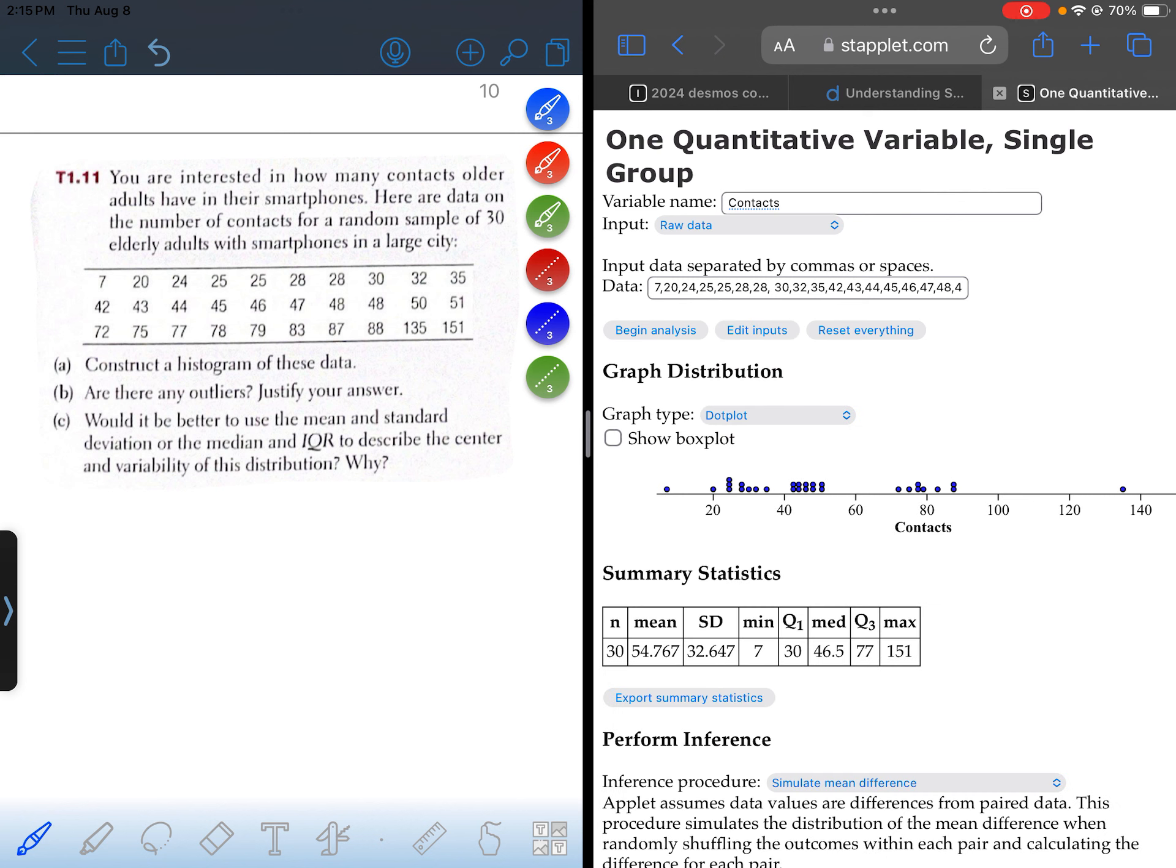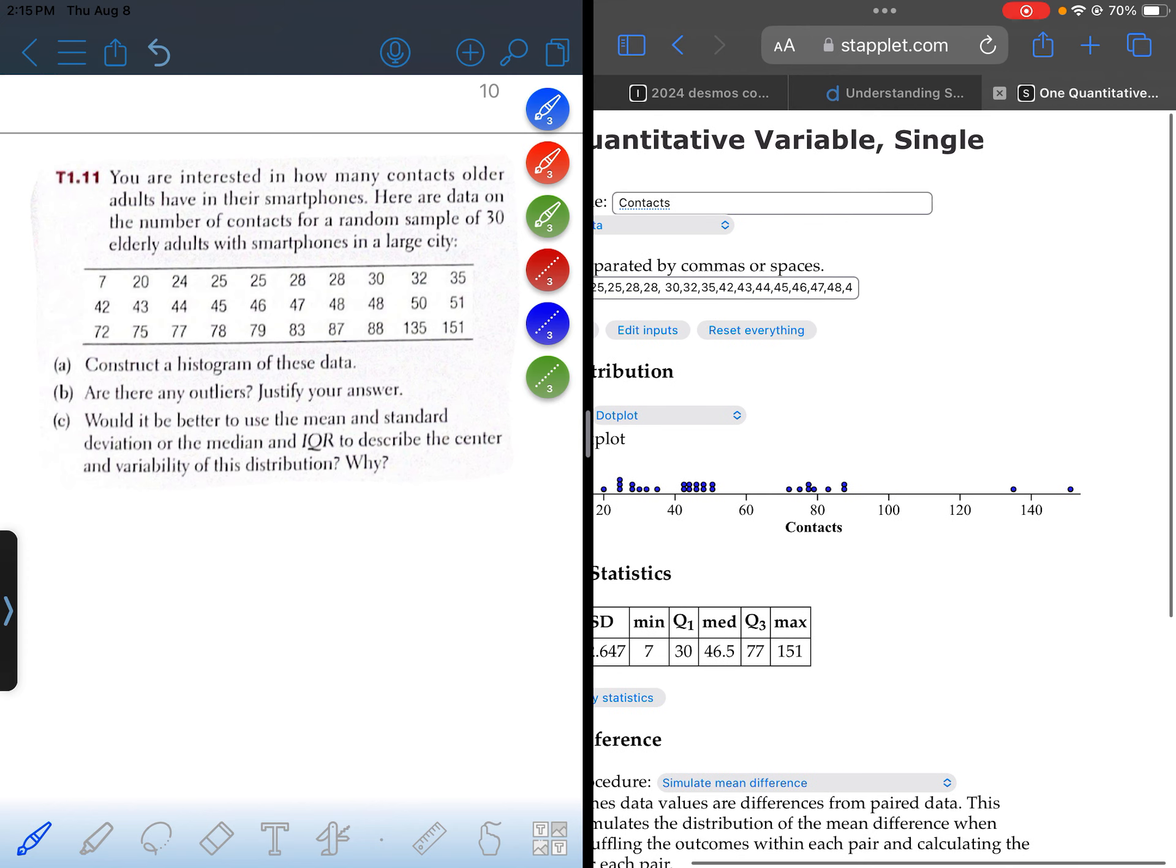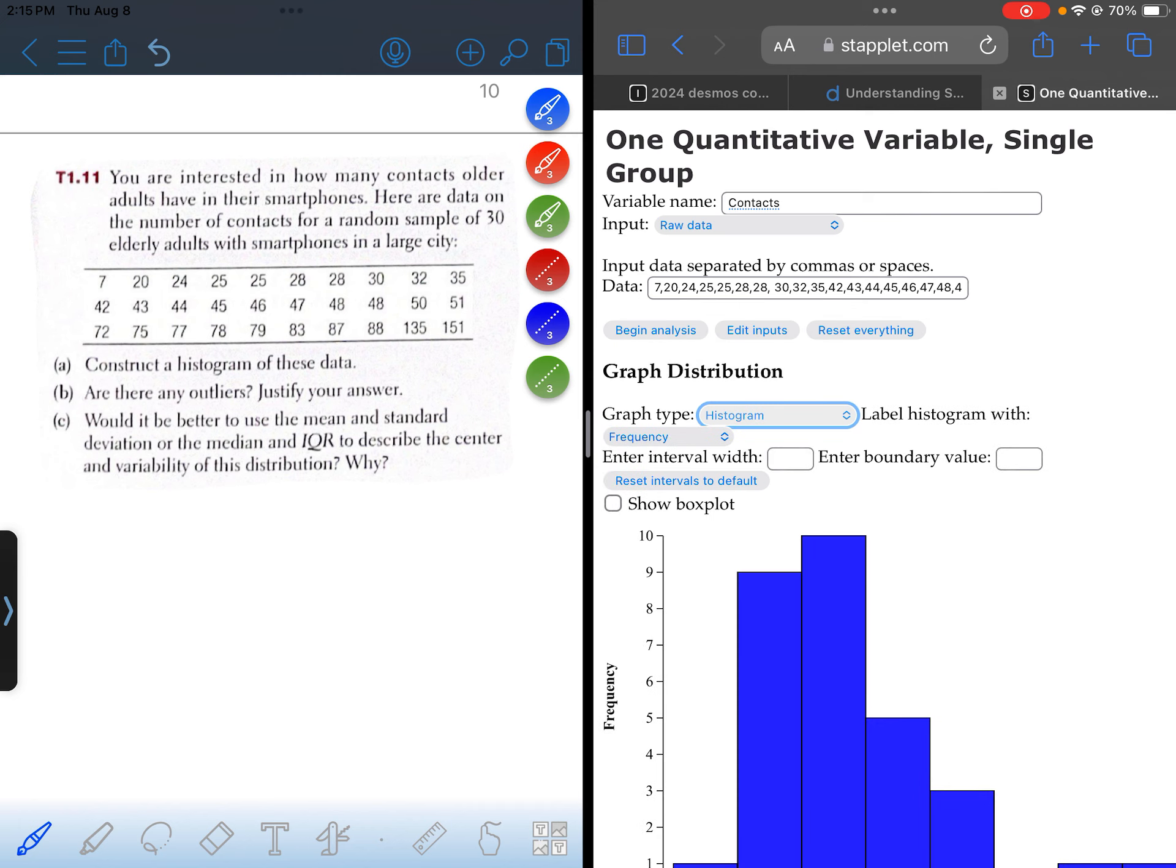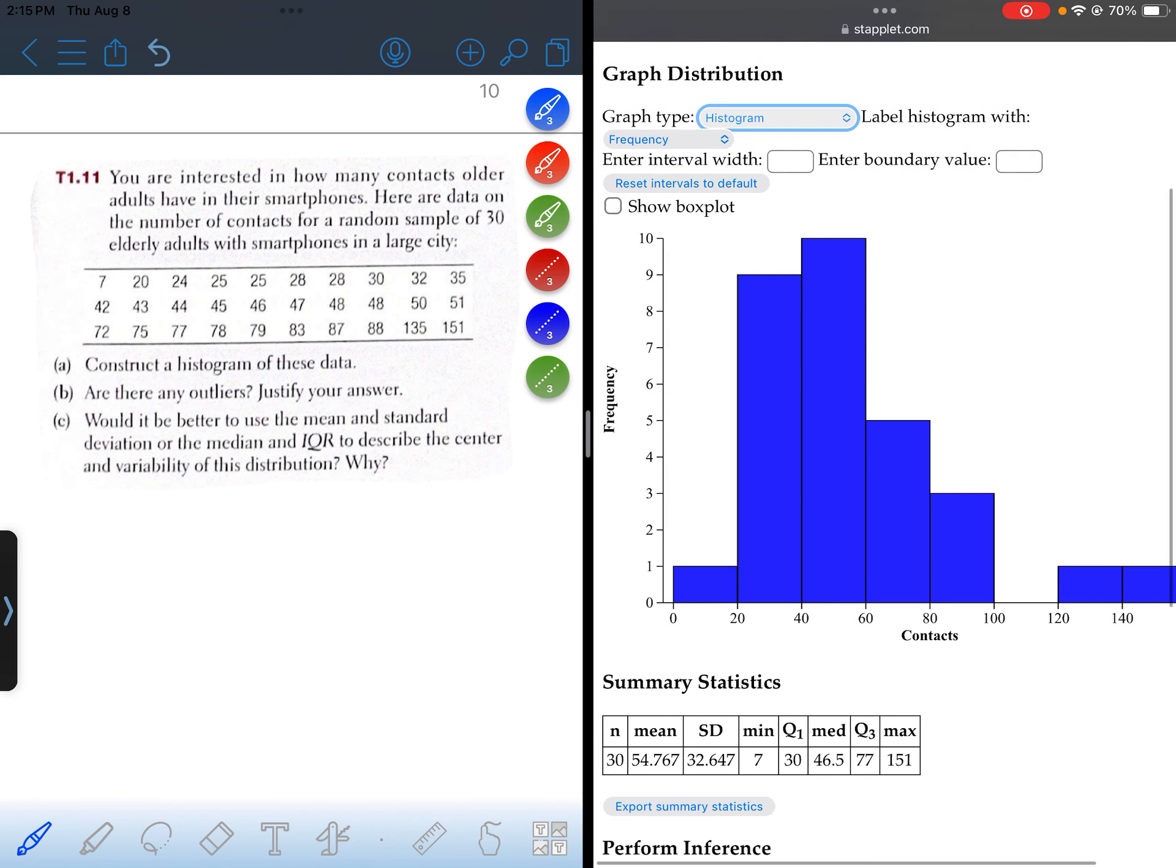It gives me a dot plot by default. Let me just make sure there's no typos. I don't think so. Alright, so let's switch it over to histogram. Okay, and so here's what it's created.